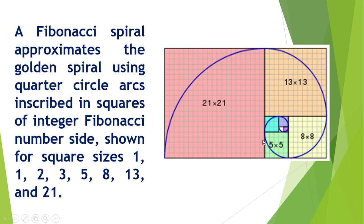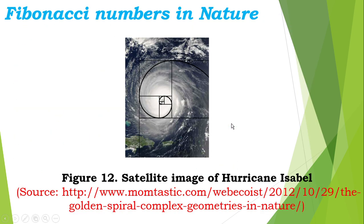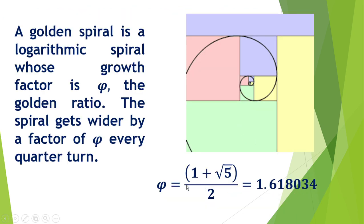This is the formula of the golden ratio: quantity of one plus square root of five all over two. We have φ = 1.6180339887. That will be the value of the golden ratio.